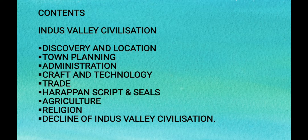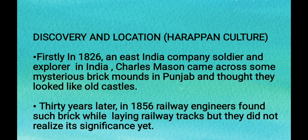The discovery and location: firstly, in 1826 an East India Company soldier and explorer, Charles Mason, came across some mysterious brick mounds in Punjab and thought they looked like old castles. Thirty years later in 1856, a railway engineer found such bricks while laying railway tracks, but they did not realize its significance yet.